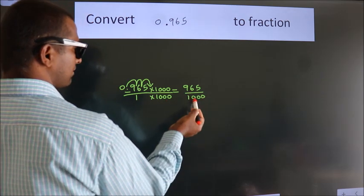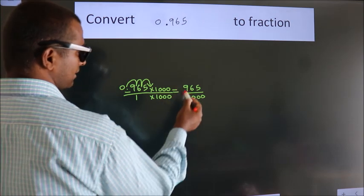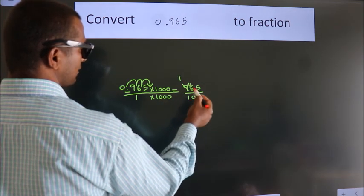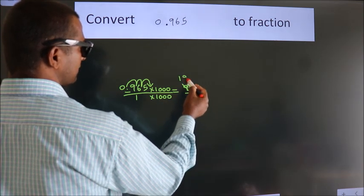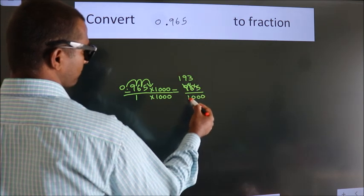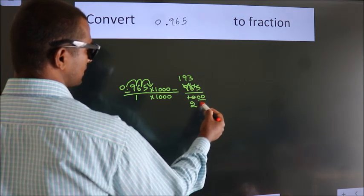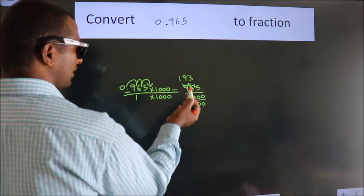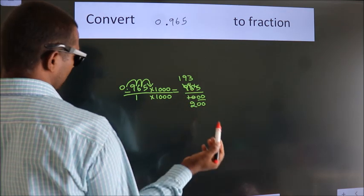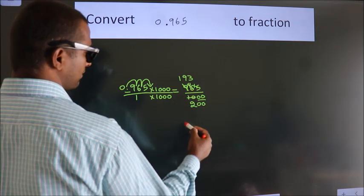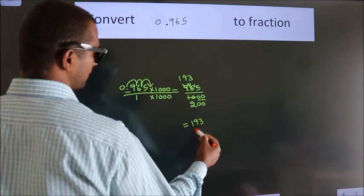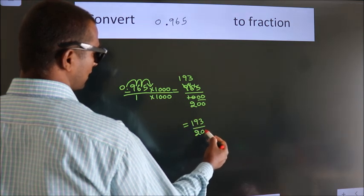Now, I cancel with 5. 5 ones, 5 nines, 5 threes, 5 twos — the zeros stay as they are down. Cannot simplify any further. So our fraction is 193 by 200.